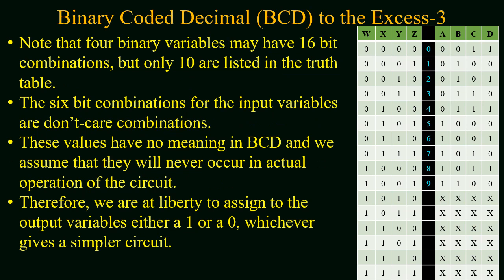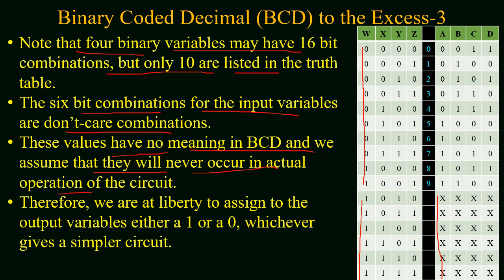The 4 input binary variables have 16 bit combinations, but decimal has only 10 digits, so 10 digits are utilized in the truth table and corresponding to these 10 inputs we have XS3 outputs. The remaining 6 bit combinations for the input variables — from input combination 10 to 15 — are don't cares. These don't care conditions have no meaning in BCD and we assume they will never occur in actual operation of the circuit. Therefore we are at liberty to assign to the output variables either a 1 or a 0, whichever gives a simpler circuit.